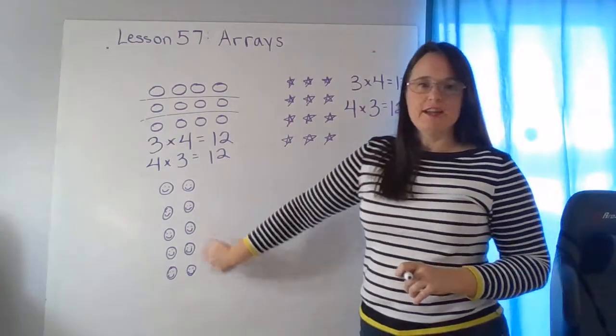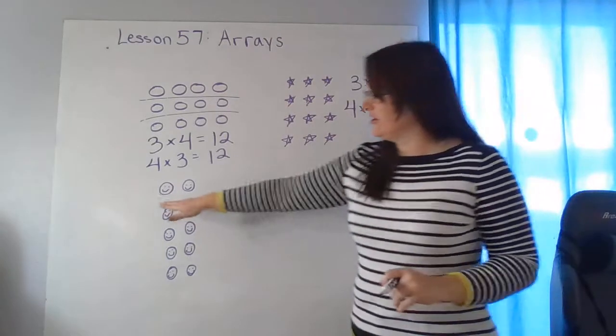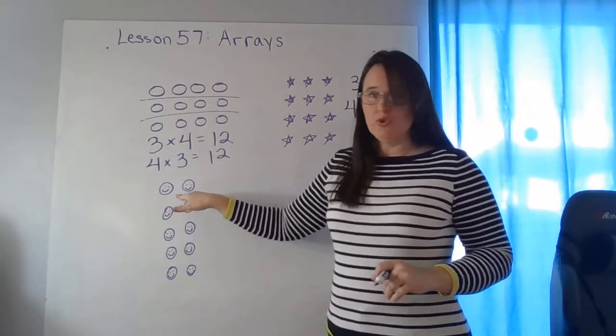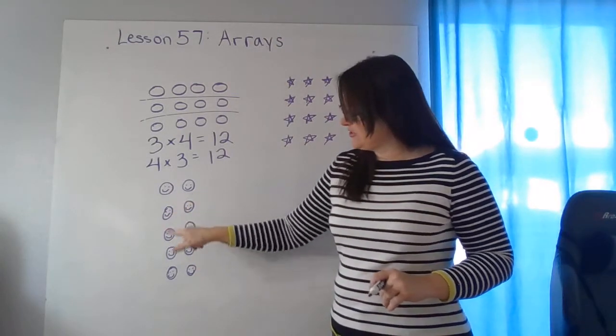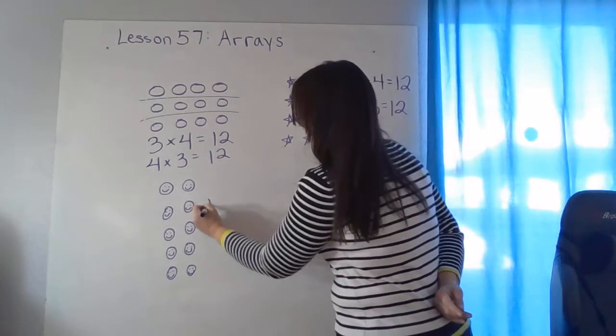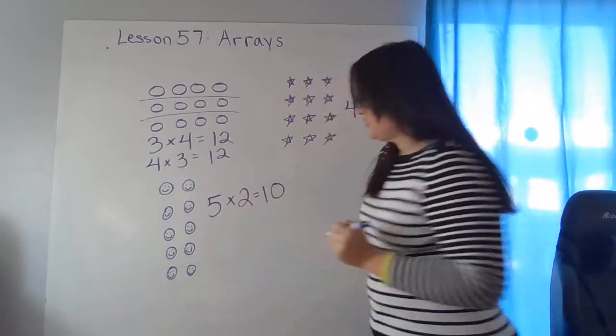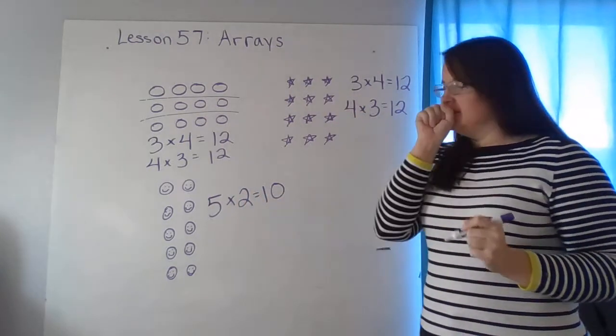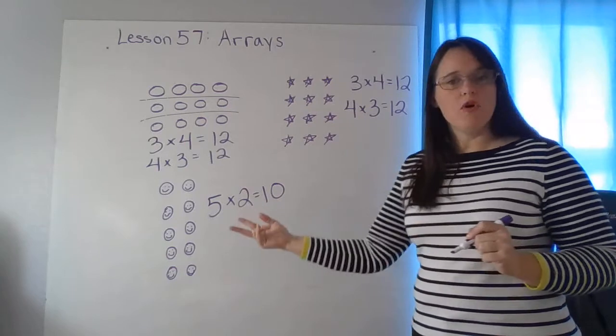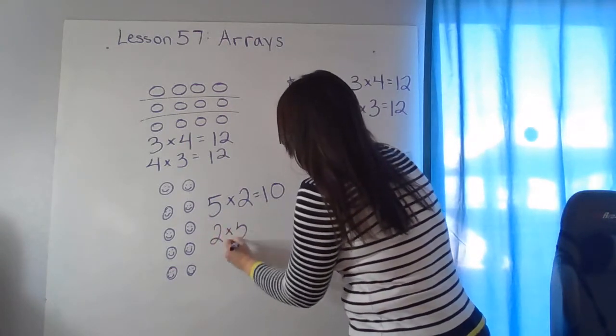Okay, let's look down at my smiley faces. I changed the numbers up on that one. Here I have groups of two and I have one, two, three, four, five groups of two or five rows of two. So I can write it like this. Excuse me. Or I could flip-flop and write it like this.